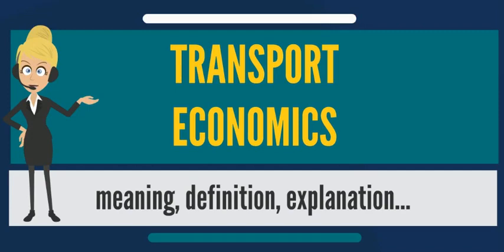For example, bus services in the UK outside London are provided by both the public and private sectors in a deregulated economic environment where no one specifies which services are to be provided, so the provision of services is influenced by the market. Whereas bus services within London are provided by the private sector in a regulated economic environment where the public sector specifies the services to be provided and the private sector competes for the right to supply those services — that is, franchising.